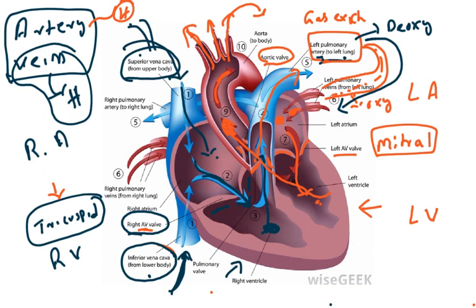Structurally and anatomically, certain differences exist. Because when the heart contracts, blood with pressure gets into the artery. To withstand that pressure, arteries have well-built muscular walls, whereas veins do not. But physiologically, remember: veins always carry blood towards the heart, whereas arteries always carry blood away from the heart. This is how blood circulation occurs.